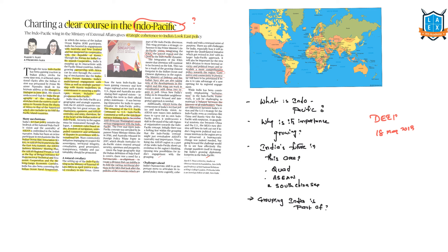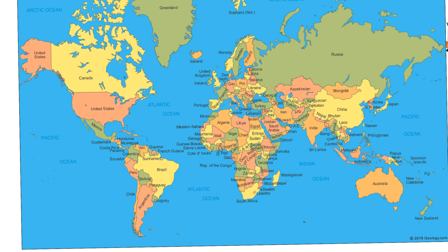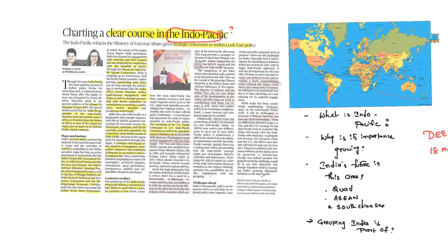Let us try to understand what the Indo-Pacific is and why its significance is growing. Looking at this map, the Indo-Pacific region consists of the region from the east coast of Africa to the Americas — including African countries, Southeast Asia, South Asian countries, Oceania, and the Americas. All these constitute what we call the Indo-Pacific region today, making it a very wide strategic region.